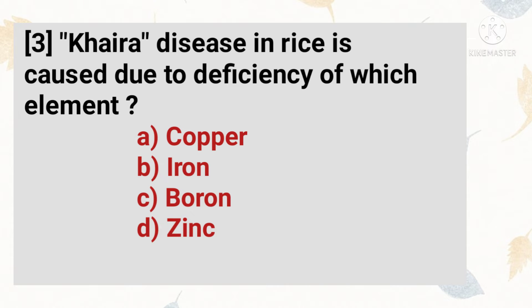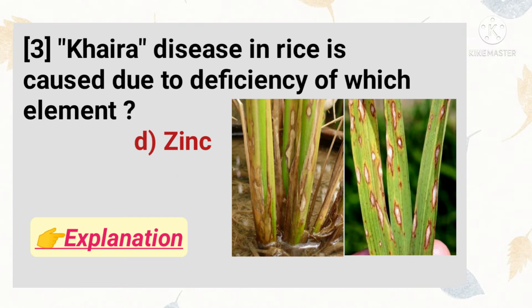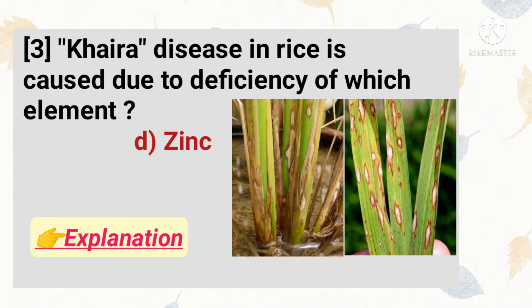Khoira disease in rice is caused due to deficiency of which element? The right answer is zinc. Zinc is an important micronutrient for plant growth. The deficiency of zinc causes Khoira disease in rice, and the main symptom of Khoira disease is discoloration of lower leaves.